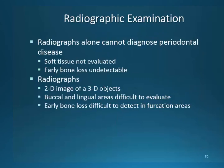Radiographs alone do not detect periodontal disease. Soft tissue must be visually examined for changes that will lead to early detection of soft tissue and early bone level changes. Radiographs are 2D images of three-dimensional objects, so buccal and lingual surfaces are not well represented and are difficult to evaluate. In areas of molar furcations, bone loss is most difficult to detect — only through the use of a furcation probe can we truly be accurate in detecting that this defect has actually developed.